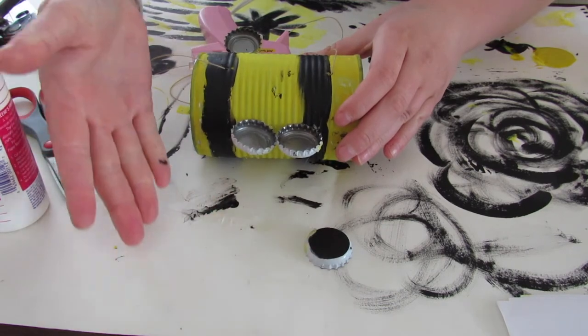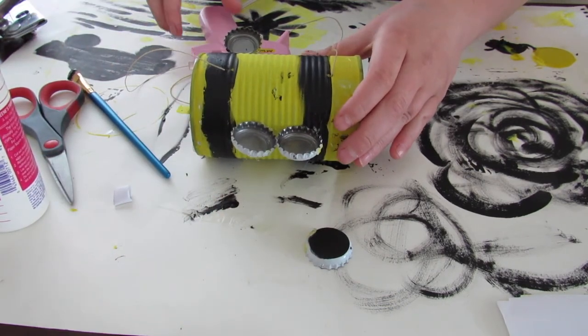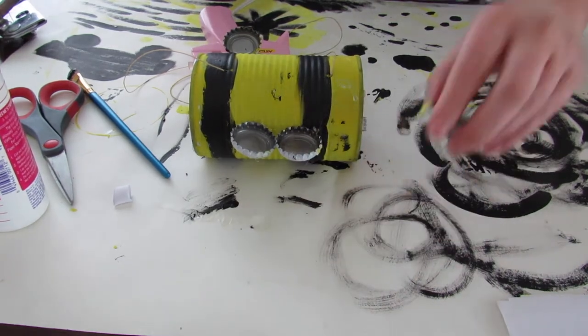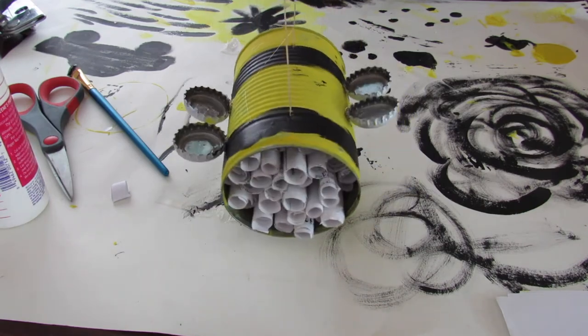That way it is even on both sides, but like I said, it doesn't have to be perfect. And you're going to do the same on the other side, creating a total of four bottle caps on your can. And here's the final product.